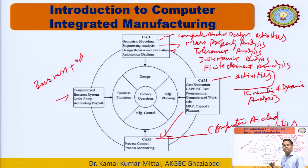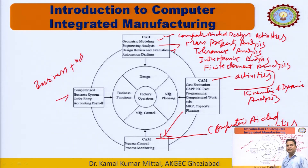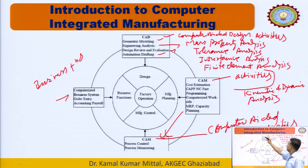By using a rapid prototyping machine, we can easily make a 3D part quickly to analyze whether the design meets specifications or if changes are required. Then go for automated drafting. These four — geometric modeling, engineering analysis, design review and evaluation, and automated drafting — are the components of the design module.